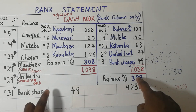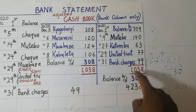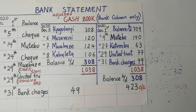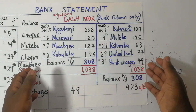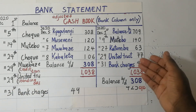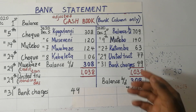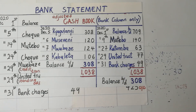Now that credit balance of 308 is what we call an overdraft. An overdraft simply means that an entity withdrew more money than it had in the bank, and because it withdrew more money than it had in the bank, you end up having a negative balance on the cash book. In this case, we are having a cash overdraft of 308 shillings. So now we have been doing bank reconciliation statements when we were only having a debit balance. What if we are having a credit balance or a bank overdraft? How do we prepare the bank reconciliation statement in this kind of scenario?